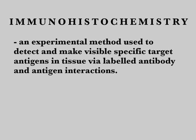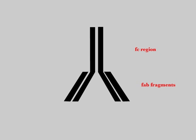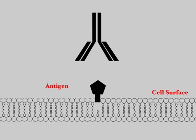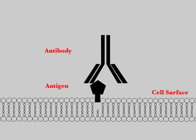Immunohistochemistry is an experimental method used to detect and make visible specific target antigens in tissue via labeled antibody and antigen interactions. An immunoglobulin G antibody consists of a constant FC region and two variable Fab fragments. The paratope or antigen binding site exists at the edge of the Fab fragments. An antibody binds selectively to the target antigen via attractive forces between the paratope of the antibody and epitope of the antigen.